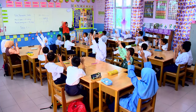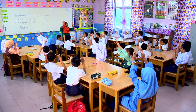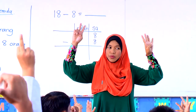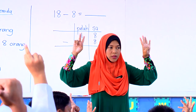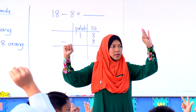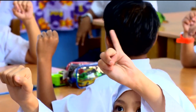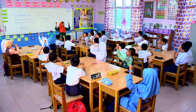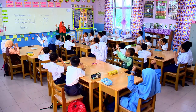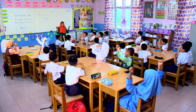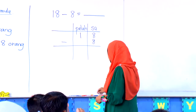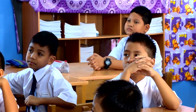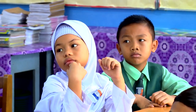So kita ada 8 nak tolak dengan 8, kita kira sama-sama. 1, 2, 3, 4, 5, 6, 7, 8. Sekarang adakah lagi jari yang dibuka? Tak ada. Maka berapakah bilangan di sini? 0. Kita dapat 0.